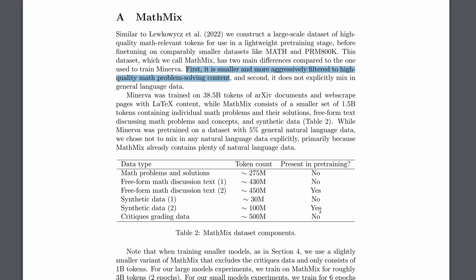The math mix was an aggressively filtered set of tokens of high-quality math problem-solving content. And notice how much smaller it is at 1.5 billion tokens compared to Google's Minerva, which was 38.5 billion tokens. But there was one more thing that I noticed that I found fascinating. While they don't tell us anything about the specific data that they use, they do have this category Synthetic Data 2. That's data generated by the language model itself. And for that category Synthetic Data 2, they say, was it present in pre-training? Yes.